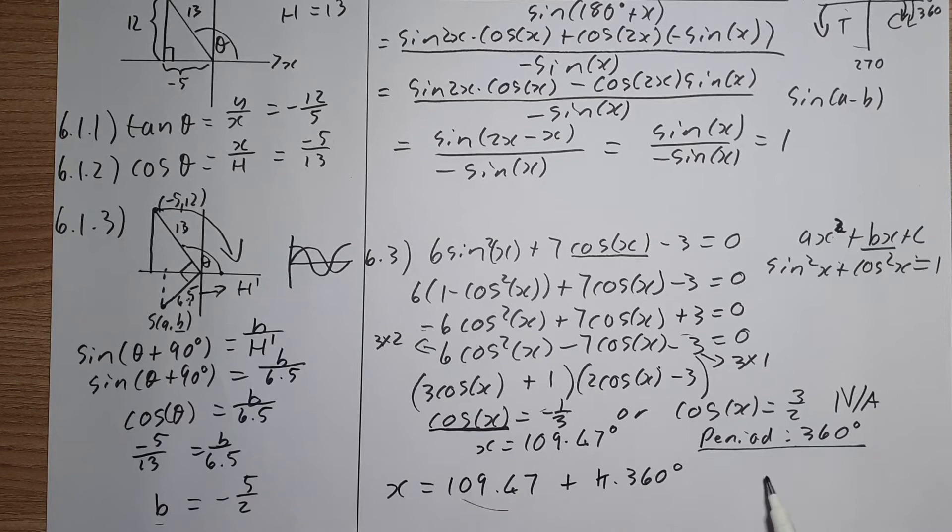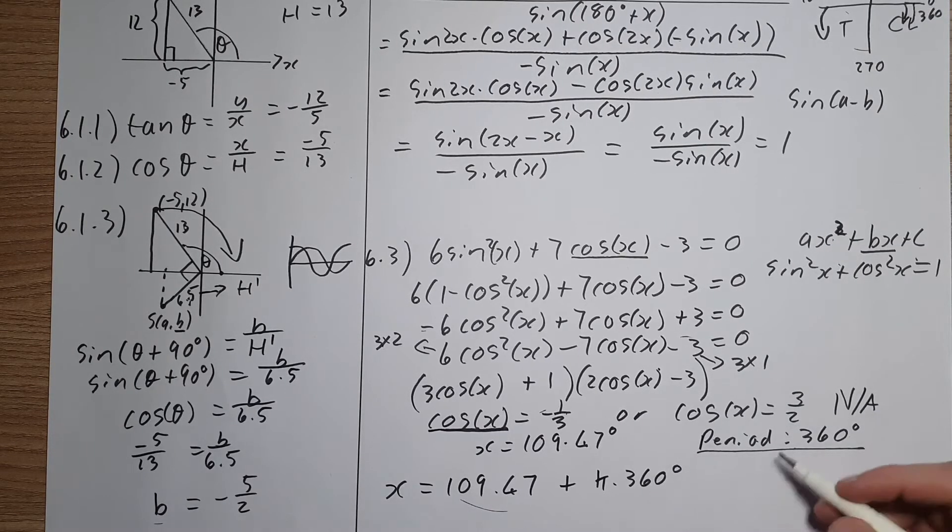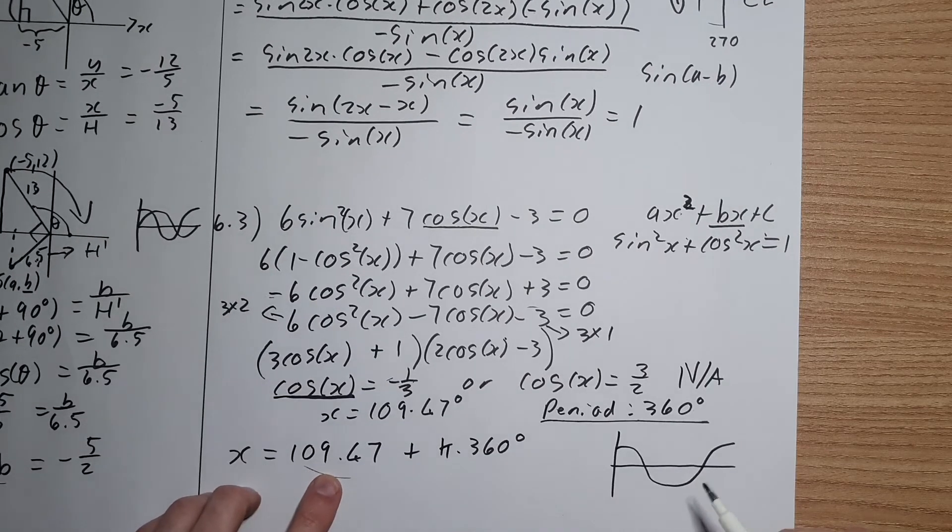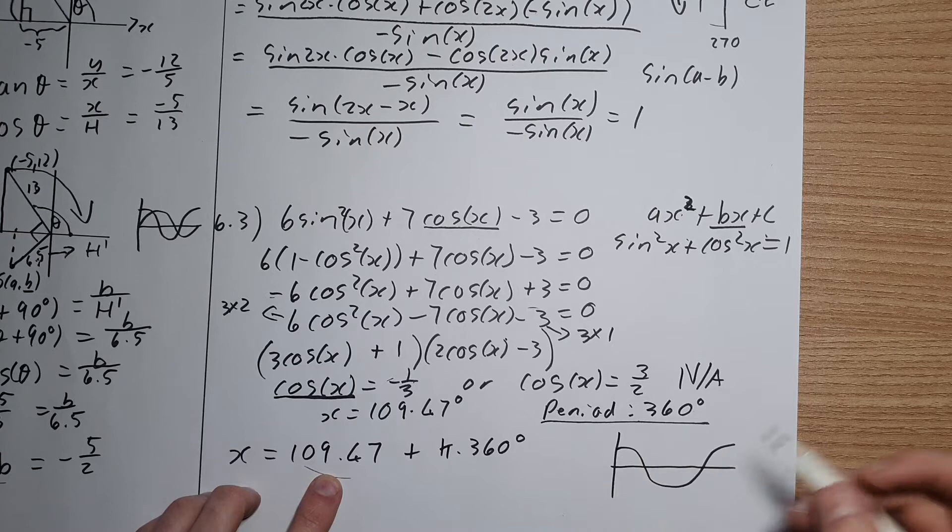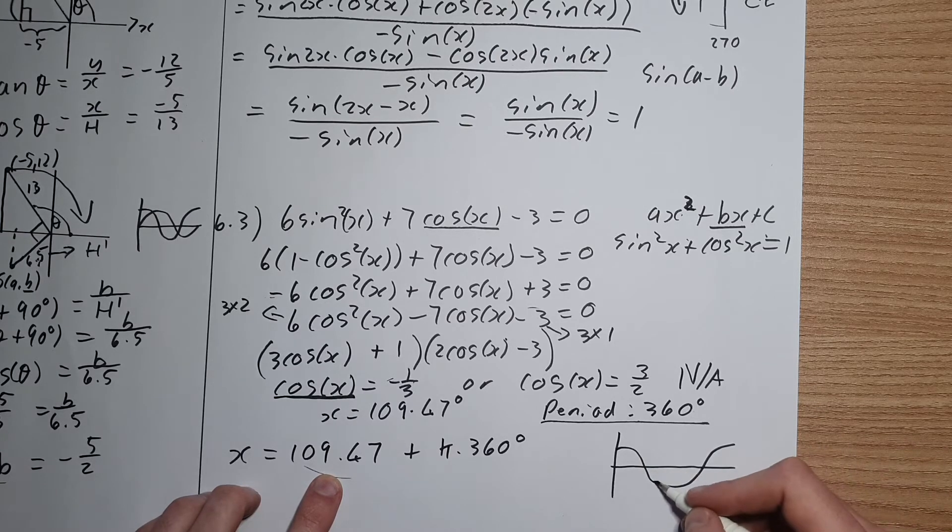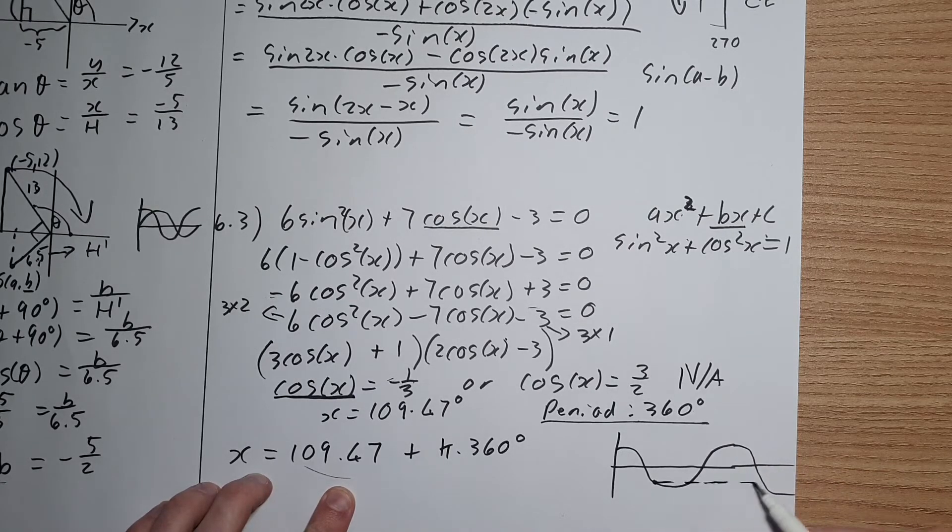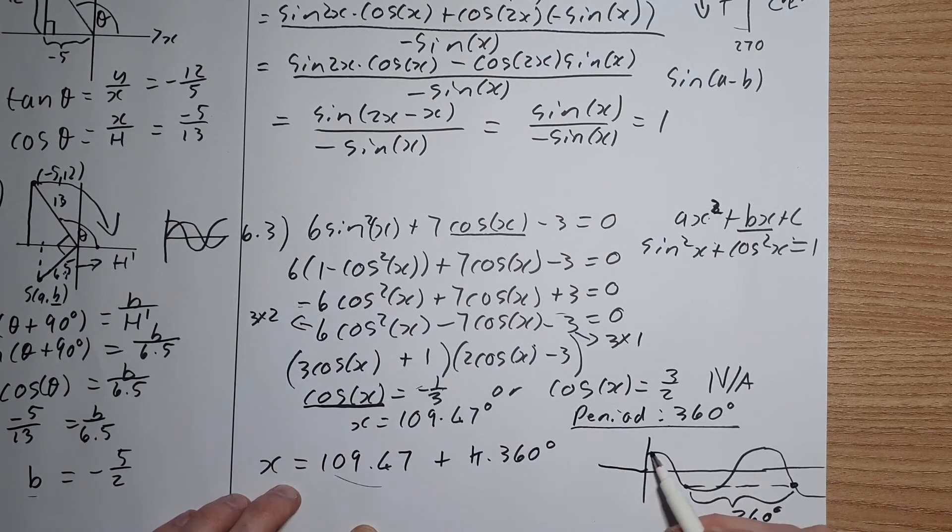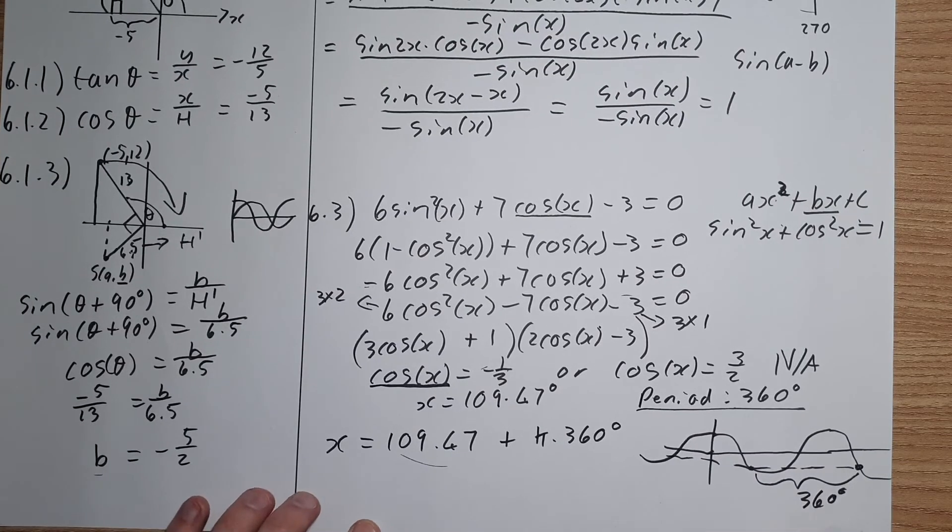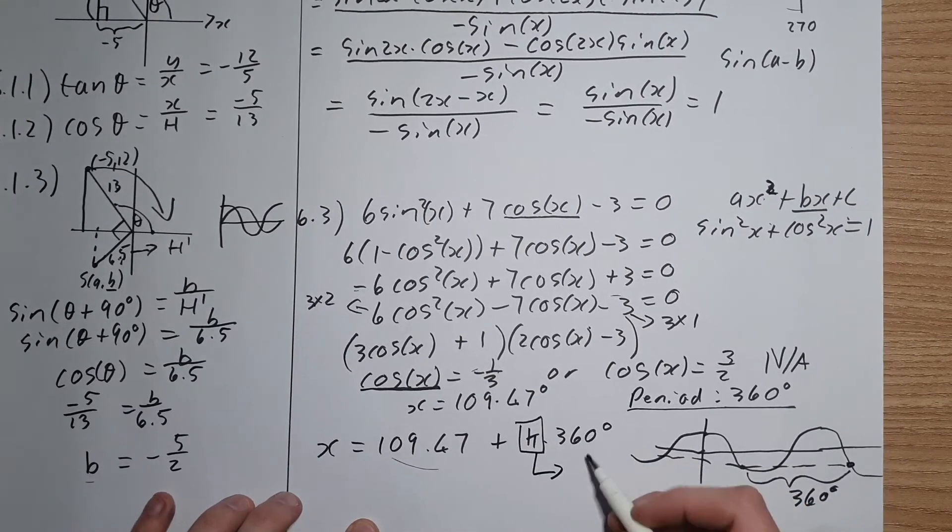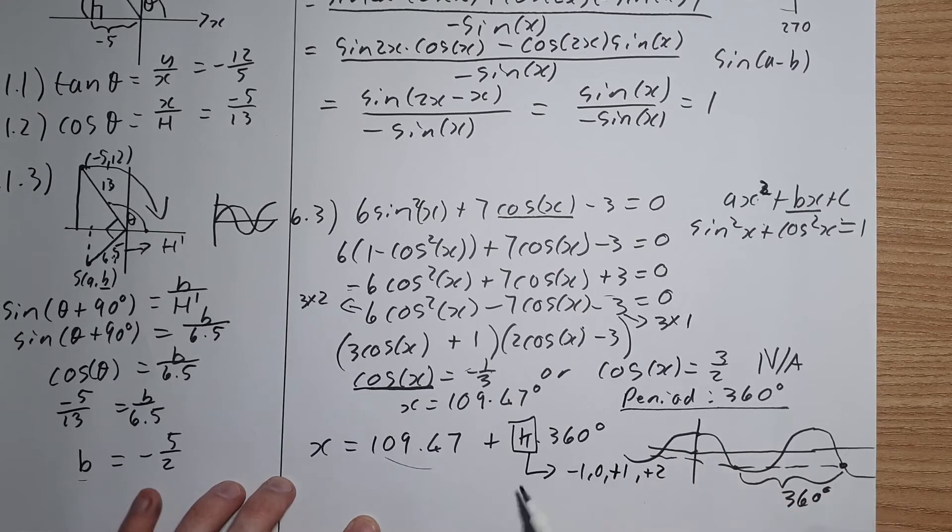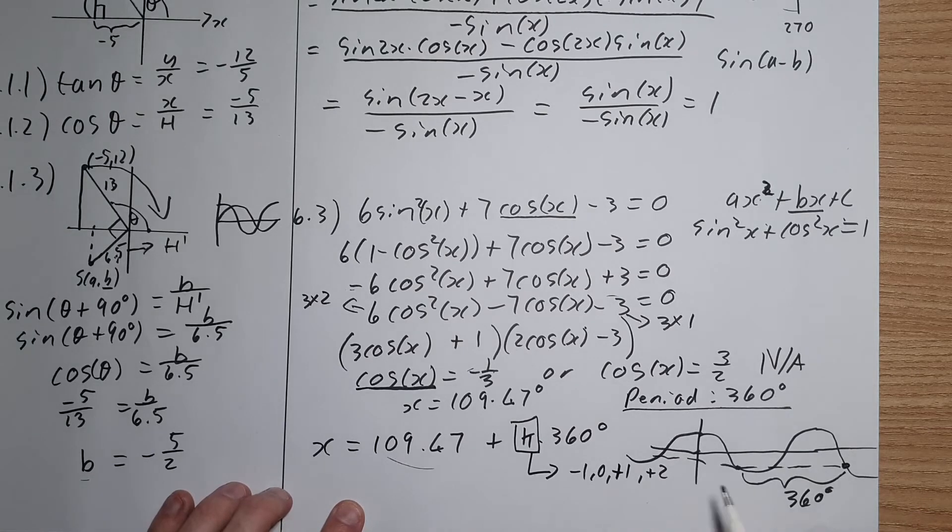So why do we add this? Because the period of the cos function is 360 degrees. So starting at this point, 360 degrees later, we're going to get where it's equal to the same, because remember, our graph looks something like this. So 109 degrees is going to be somewhere here. But the graph continues on in both directions, so we've got to find where the next point is, and that's going to be 360 degrees to the right, and if we go left, it will be minus 360. So therefore, k needs to be an integer. Remember integers is negative 1, 0, positive 1, positive 2, so it's from negative infinity to positive infinity, but only whole numbers. So therefore, k needs to be an element of integers.